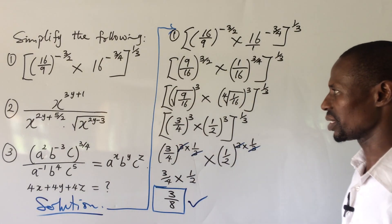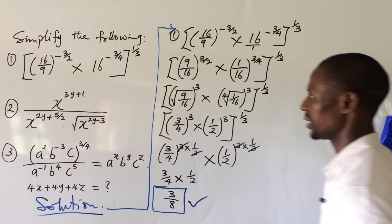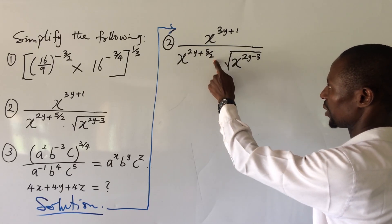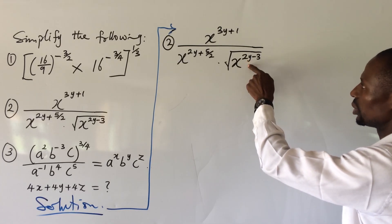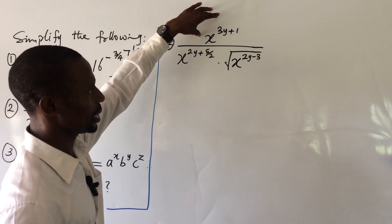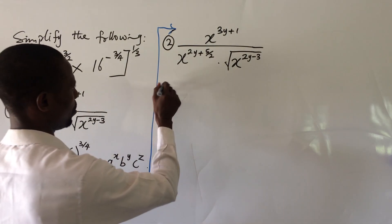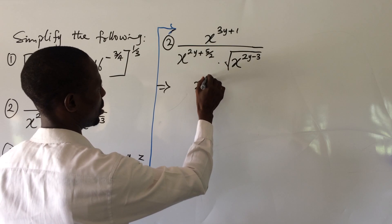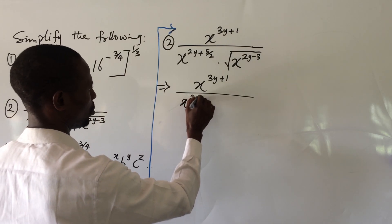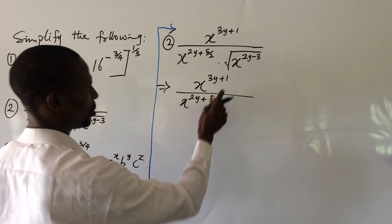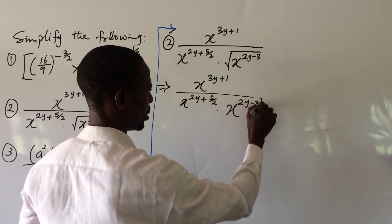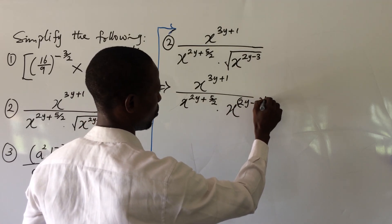Let's take question number two: x to the power of 3y plus 1, all over x to the power of 2y plus 5 over 2, times the square root of x to the power of 2y minus 3. We keep the first part and handle the square root term. This gives us x to the power of 3y plus 1, all over x to the power of 2y plus 5 over 2, times x to the power of 2y minus 3, all to the power of 1 over 2.